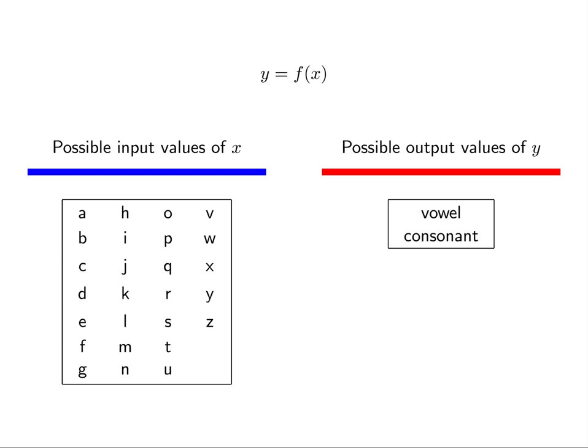Let's take a look at one particular function. This function accepts as input a letter of the English alphabet. The job of this function is to categorize each letter as either a vowel or as a consonant.